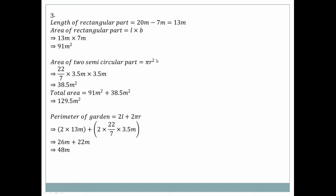The area of the semi-circular path = π R² = (22/7) × 3.5 × 3.5 = 38.5 m². Total area = 91 + 38.5 = 129.5 square meters.